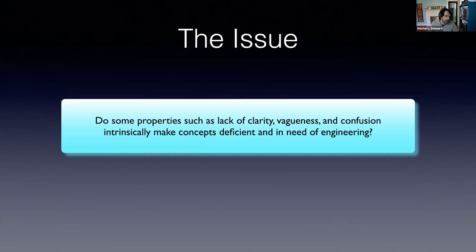What we would want are properties of concepts — for example, lack of clarity, vagueness, or confusion — that intrinsically, on their own, independently of the context of use, make concepts deficient, and as a result, at least potentially make them in need of engineering. The question is going to be: are there such properties, and more precisely, are clarity, vagueness, and confusion the type of properties that make concepts intrinsically deficient and give us a potential reason to engineer?